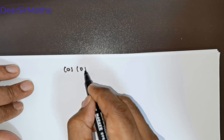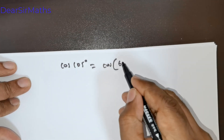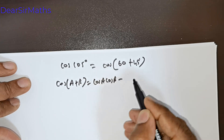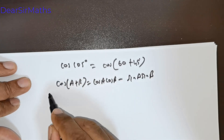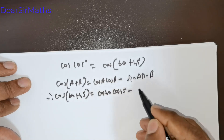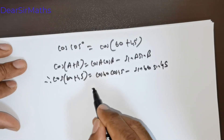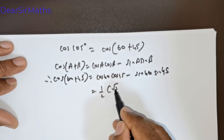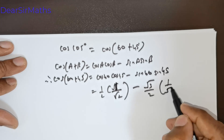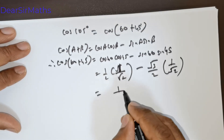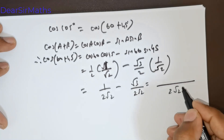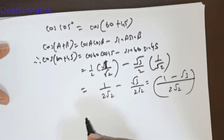Cos 105 degrees equals cos(60 + 45). Using the formula cos(A+B) = cos A cos B minus sin A sin B: cos 60 cos 45 minus sin 60 sin 45 equals (1/2)(1/√2) minus (√3/2)(1/√2). Taking LCM as 2√2, this gives (1 minus √3) over 2√2. Now substitute this back.